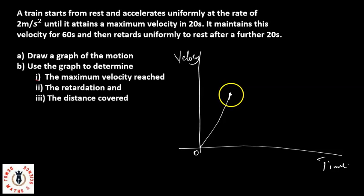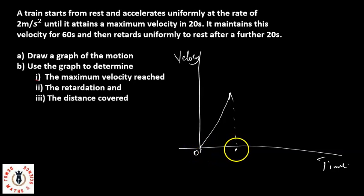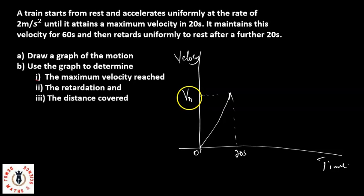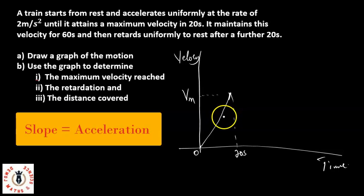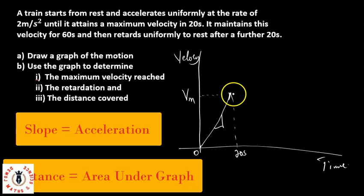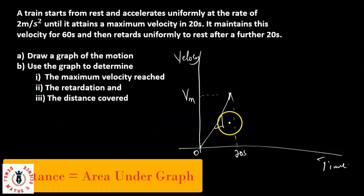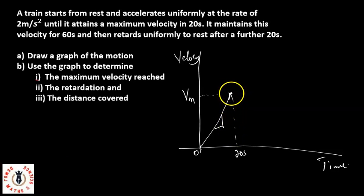At this point, let's tag it as the maximum velocity, reached in 20 seconds. Let's call the maximum velocity Vm. It achieved this with an acceleration of 2 meters per second squared. Worth noting is that for the velocity-time graph, the acceleration is the slope of the graph, while the area under the graph is the total distance covered. The train attained maximum velocity in 20 seconds, then maintains this velocity for another 60 seconds.